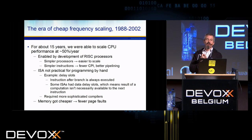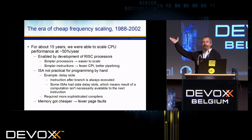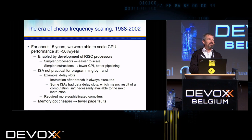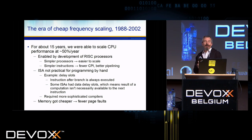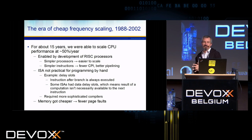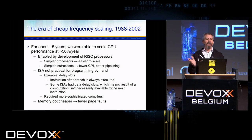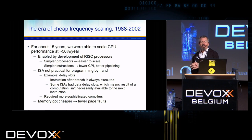Then we had the grand flip to RISC processors, where for about 15 years processors got 50% faster per year. That was simply because we went to simpler processors and people could begin to think about how to make the hardware go faster. A lot of it was done with better pipelining, but also transistor shrinkage turning into higher clock rates.